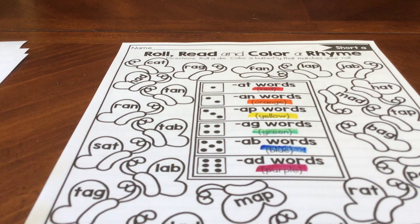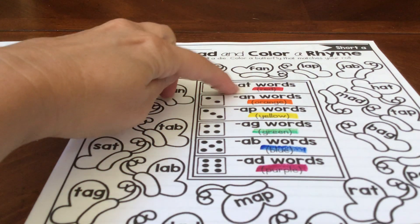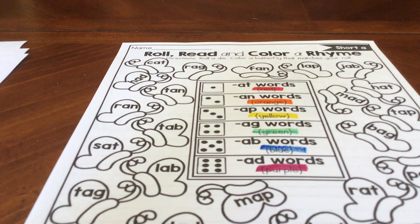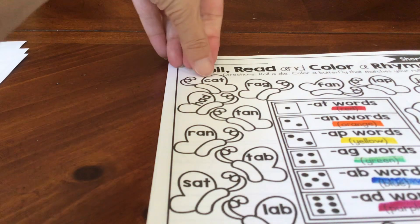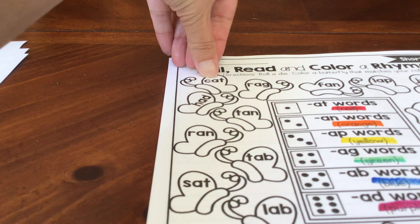All right. I don't have a dice with me today, so I'm just going to first look for all the at words. Or you could just read each word and color it when you find it. I'm going to start up here and I'm going to read the word cat.